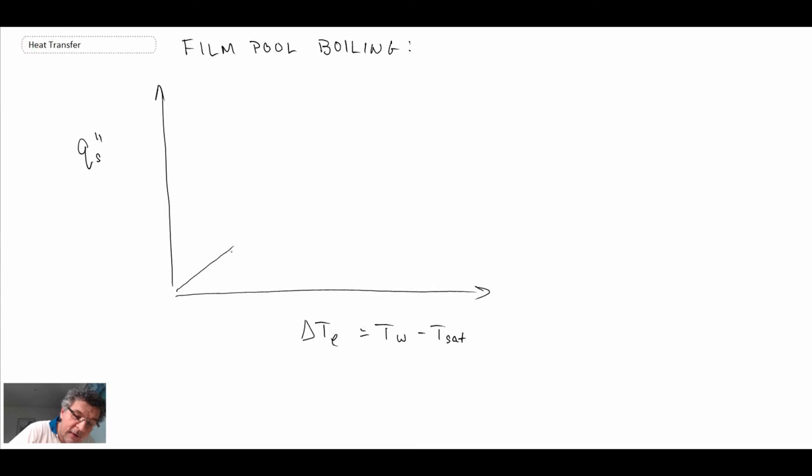Our curve goes up, we hit onset of nucleate boiling, we go up to Q_max, down, and then up again. This is the minimum; that's Q_max which we solved for in the last segment. We also had something that enabled us to go from onset of nucleate boiling up to Q_max, and that would be nucleate pool boiling.